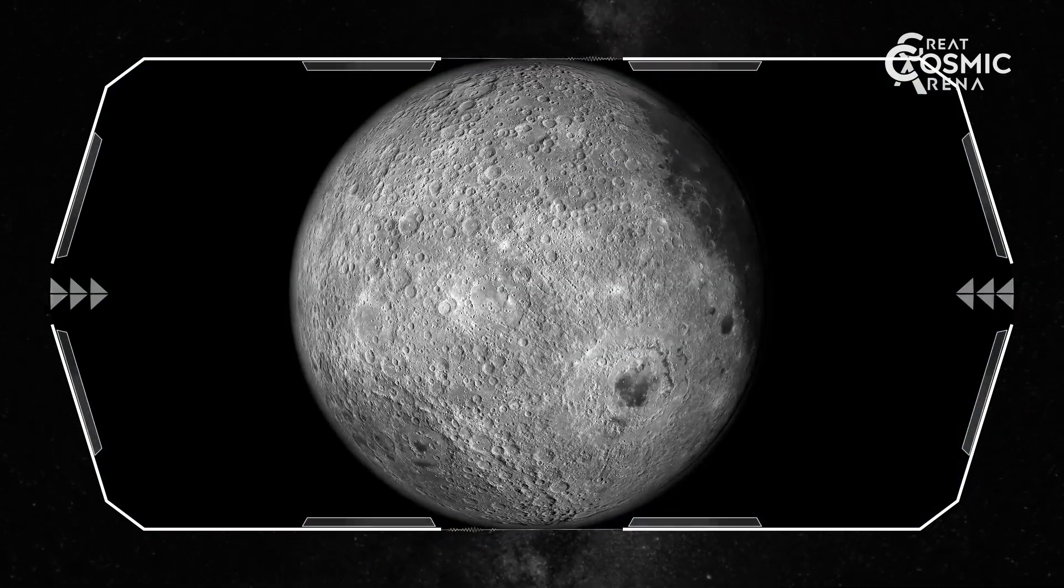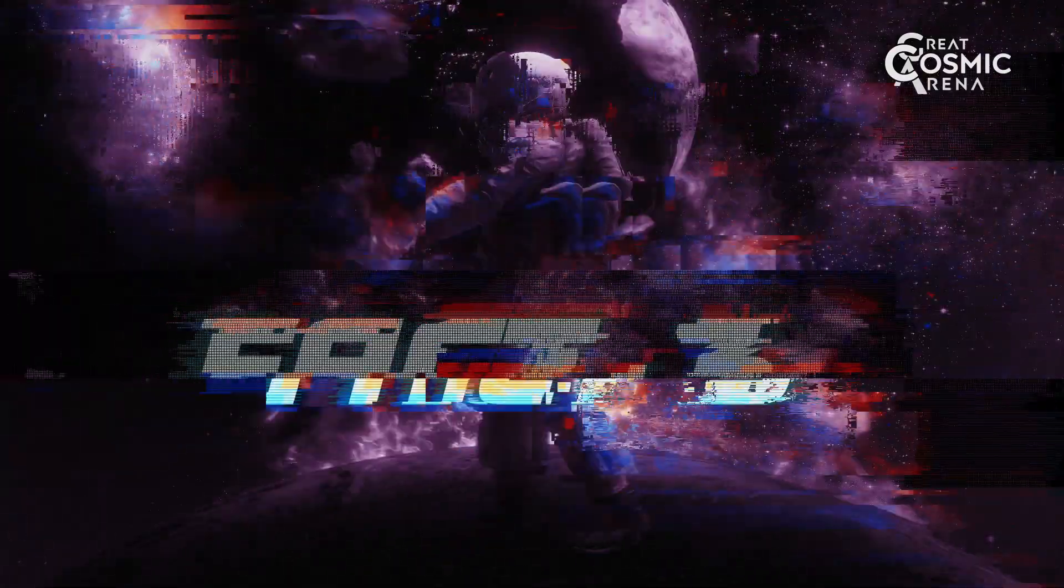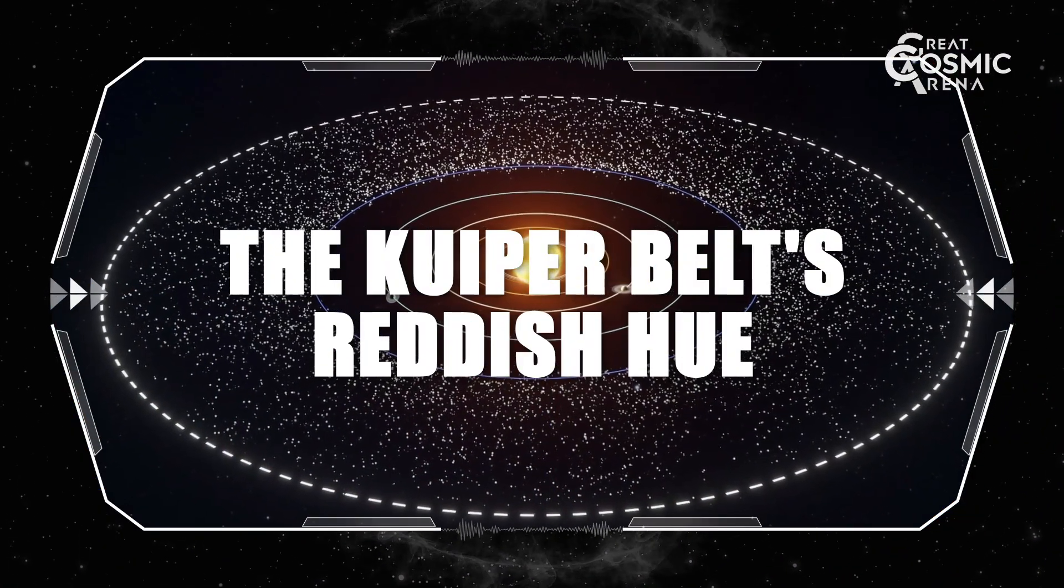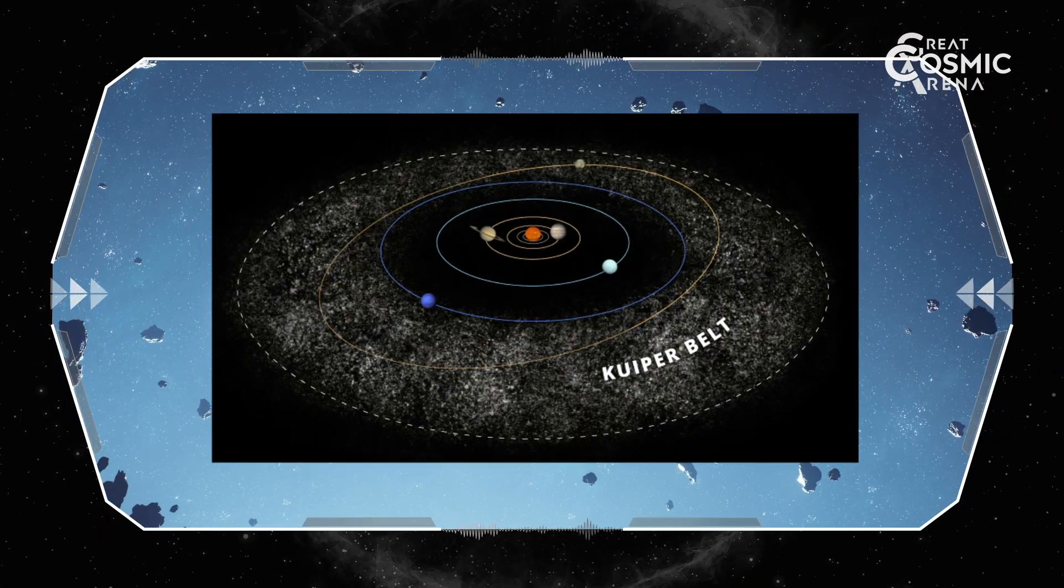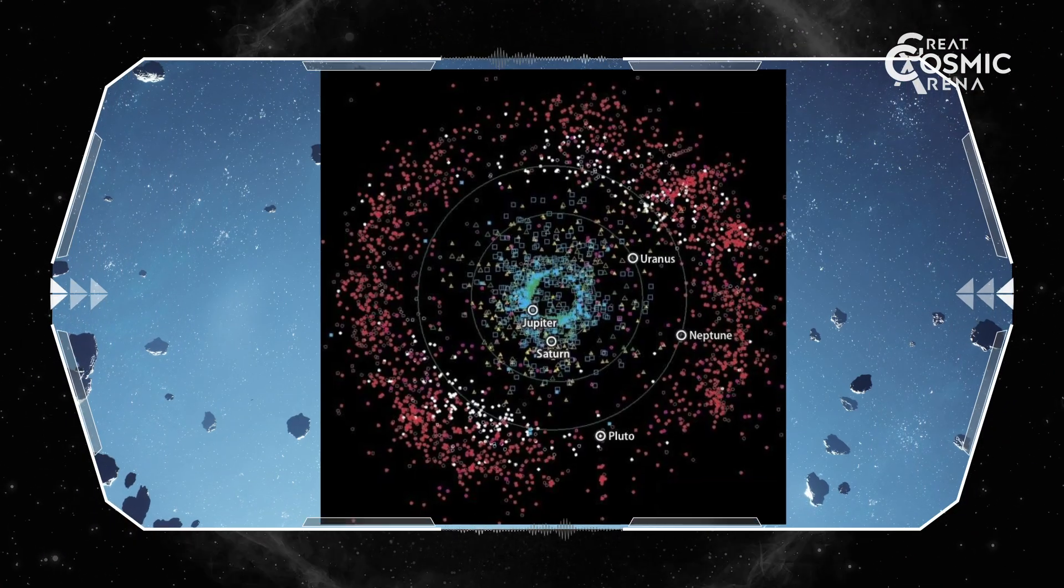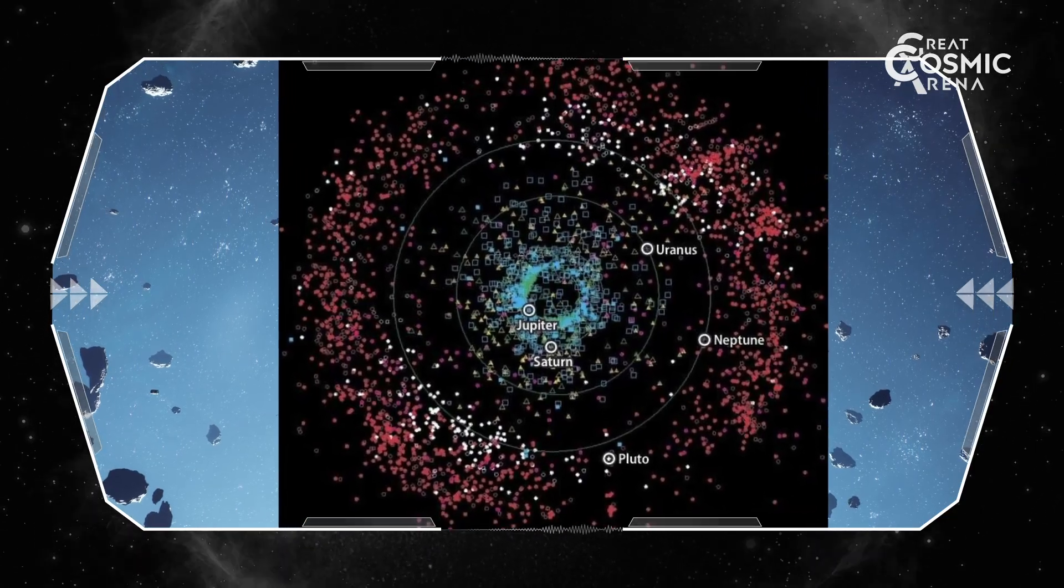The Kuiper belt's reddish hue. Many objects in the Kuiper belt have a reddish color, suspected to be due to the breakdown of organic molecules by radiation.